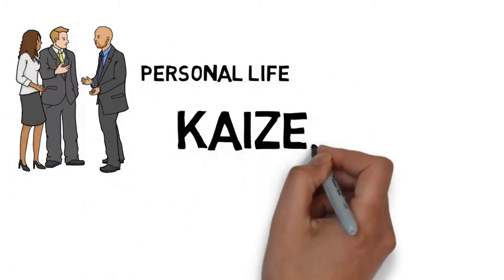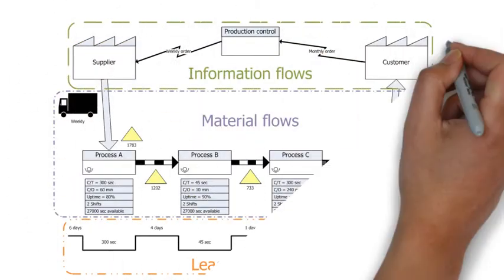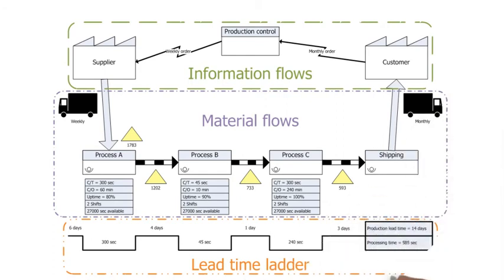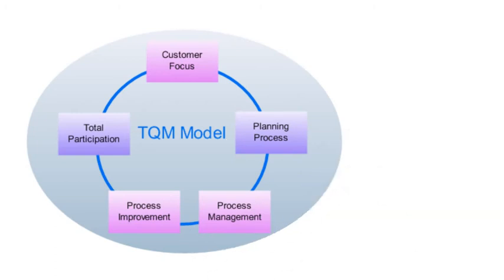Kaizen can use a number of approaches and tools, such as value stream mapping, which documents, analyzes and improves information or material flows required to produce a product or service, and total quality management, TQM, a management framework that enlists workers at all levels to focus on quality improvements.